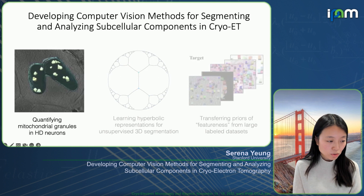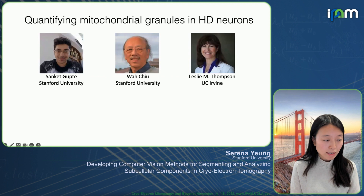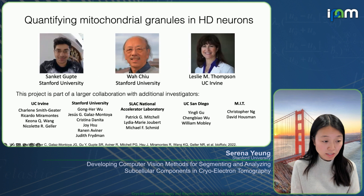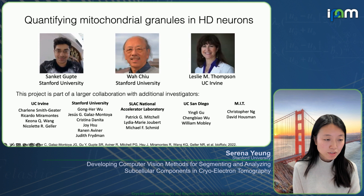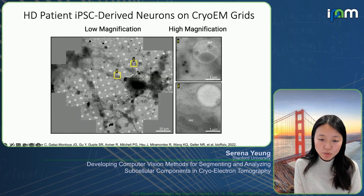I'll start with the case of trying to quantify mitochondrial granules in Huntington's disease neurons. This is work with my student Sanke Gupta, as well as collaborators Wah Chu at Stanford and Leslie Thompson at UC Irvine. This project is part of a larger collaboration involving many investigators across UC Irvine, Stanford, Slack at Stanford, UC San Diego, and MIT. I'll be talking about one specific aspect of it where computer vision has been involved.